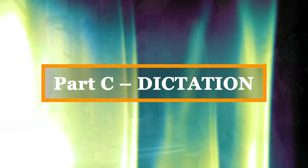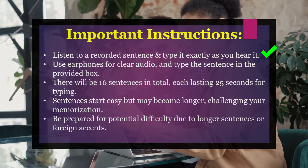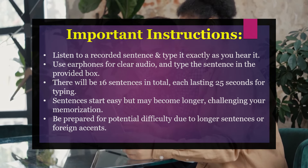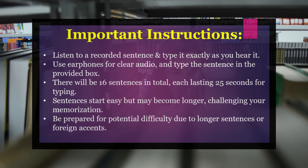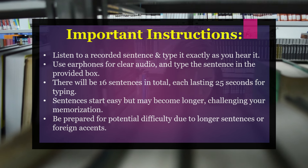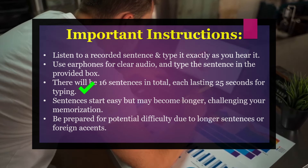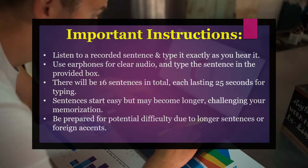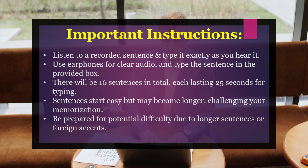Now let's move on to section three: Dictation. In this section, an automated voice will speak a sentence to you and you must type it exactly as you hear it. This is essentially a listening and typing round. You need to plug in your earphones and you will hear a recorded sentence, then type the same sentence in the box provided on screen. For example, a machine would say 'leave town on the next train' and you must type that exact sentence. Another example: 'a certified swimming instructor is with the students at all times.' Sounds easy, but here's the trick.